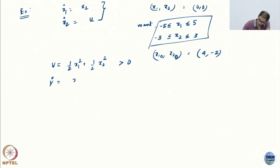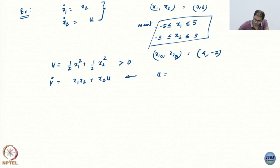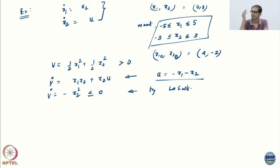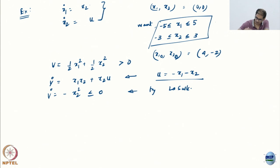If I take V̇, I get x1·x2 + x2·u. I would choose the control as minus x1 minus x2, because I will get V̇ = minus x2 squared — negative semi-definite only. Then I apply LaSalle and it will work out as a stabilizing control. It is not a strictly Lyapunov function, but we will try.